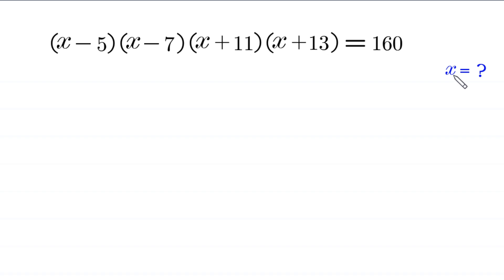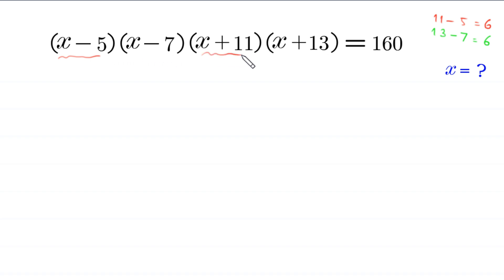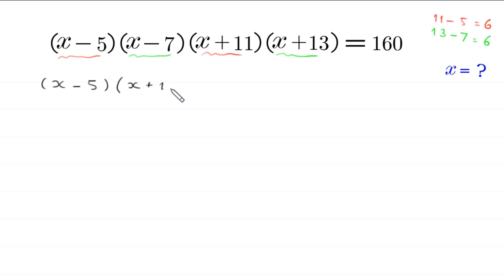Let's start. Since 11 minus 5 is equal to 6, and 13 minus 7 is equal to 6, we combine these two terms x minus 5 and x plus 11, and we combine these two terms x minus 7 and x plus 13. So this will become x minus 5 times x plus 11 times x minus 7 times x plus 13 is equal to 160.